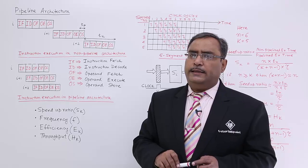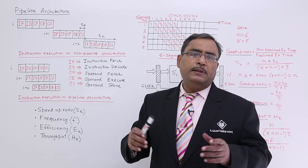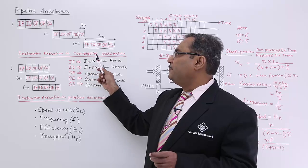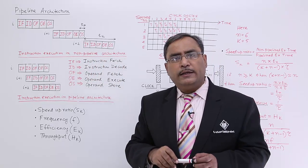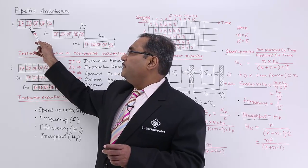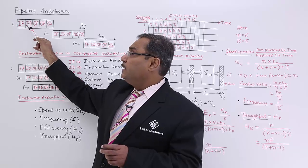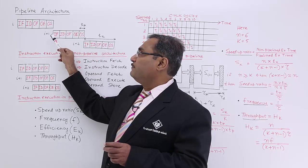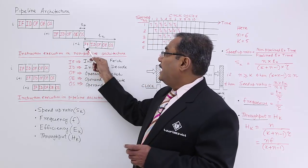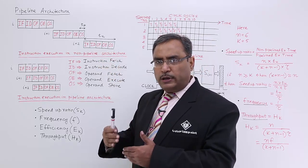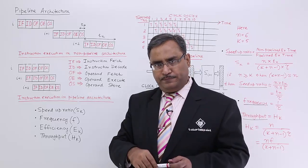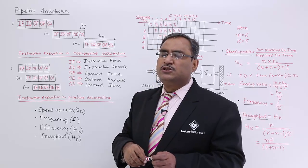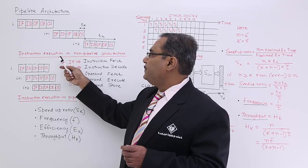A program consists of multiple instructions. In the case of non-pipelined architecture, after completion of instruction execution for the i-th instruction, then the (i+1)-th instruction will be initiated. After completion of execution of the (i+1)-th instruction, then the (i+2)-th instruction will be executed. Instructions go on executing after finishing of the previous one — they execute in a fashion known as instruction-wise interleaved. That is known as the non-pipelined architecture.